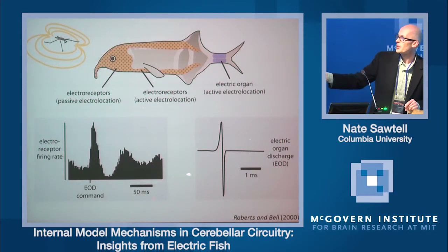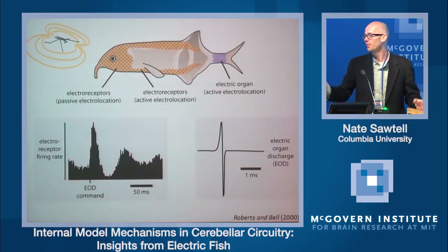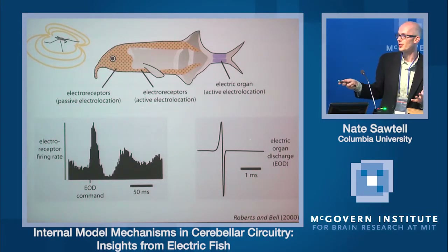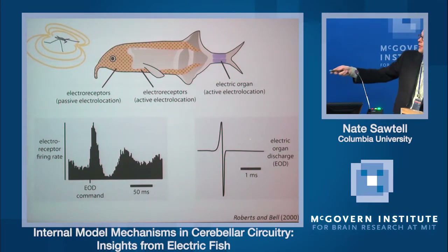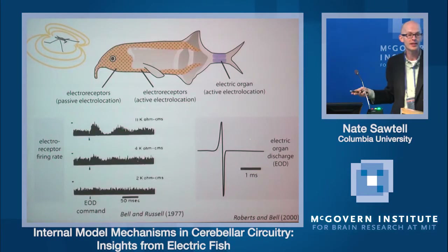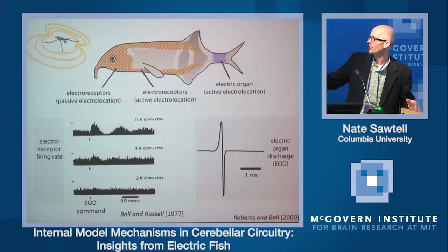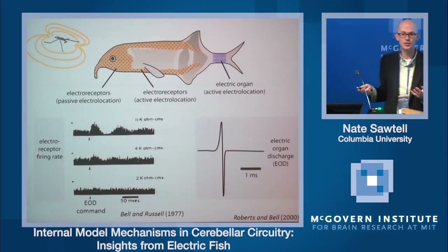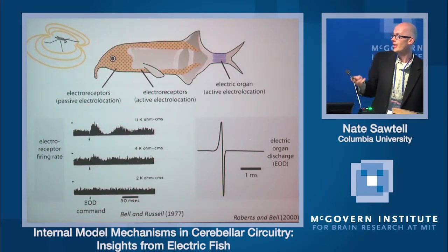This perturbation of the receptor response is long-lasting — around 200 milliseconds — which is about the same interval as the fish's pulsing rate. So if he simply gated this interference out, there would be no time left to sense the world. Another problem is that this interference pattern is not fixed but changes depending on the environment on multiple timescales. For example, changes in water conductivity have a large effect on how the electric organ discharge affects these electroreceptors. So the fish may need to learn the sensory consequences of its own electric organ discharge.